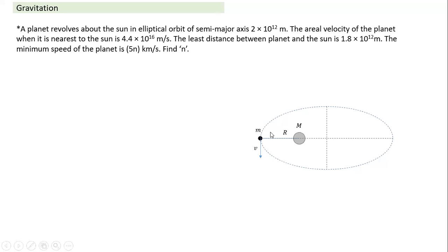Those two conditions are: since any planet's force is always directed towards the sun, torque about the sun is zero. If torque about sun is zero, angular momentum will not change — angular momentum remains constant. So one condition is angular momentum constant, and the second is mechanical energy is also constant.